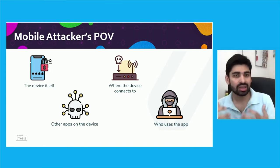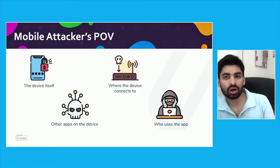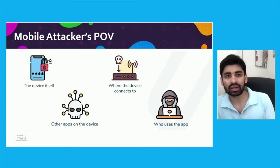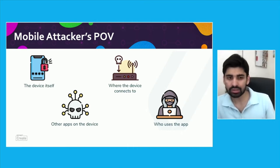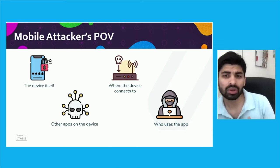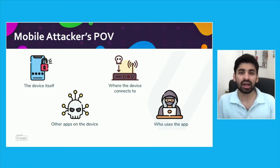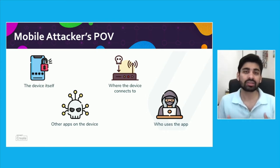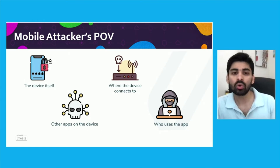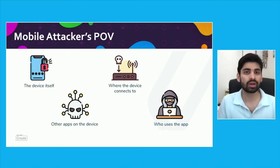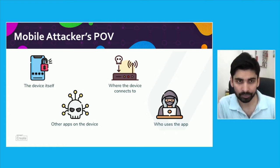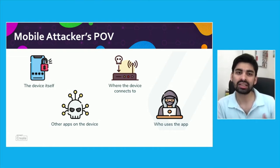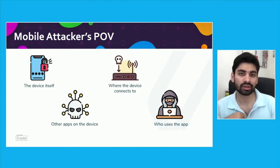The first is the device itself — as a mobile app developer, we don't know on what device the app will be installed or what network it will connect to, whether enterprise, home, or a public open Wi-Fi at an airport. The second is other apps on the device — you don't control what an end user installs and which apps can interact with your app. Third, with the device being mobile in nature, we don't know who is actually using the app — whether it's the right person or someone else with access to the device. These four factors create a new and easy attack surface for attackers.